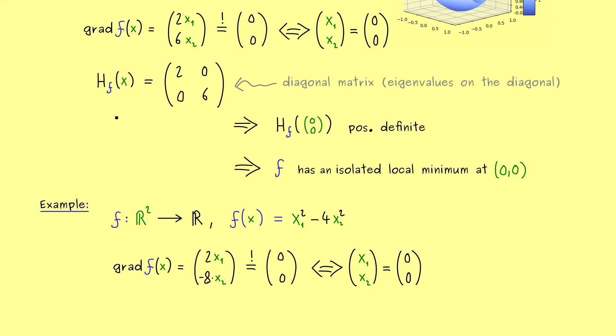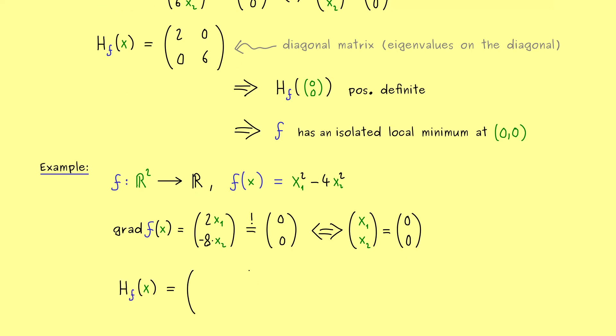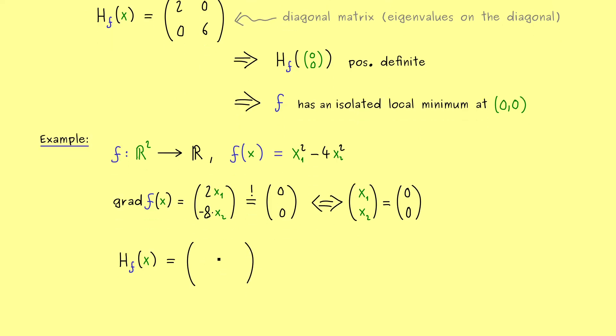And again the Hessian can tell us if this is the case. So I would say let's immediately calculate our 2×2 matrix again. And as before use the gradient and calculate the partial derivatives of it. Therefore first we have 2 and 0 and then 0 and minus 8. So again we have a diagonal matrix so these are the eigenvalues but the one is positive and the other one is negative.